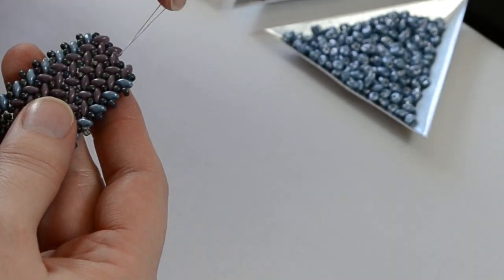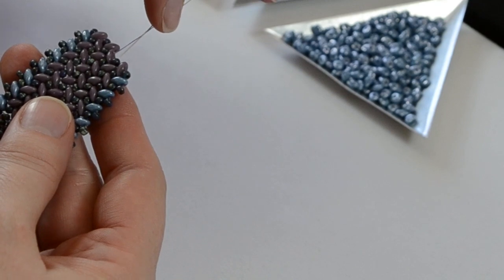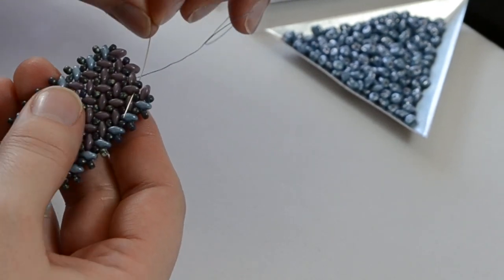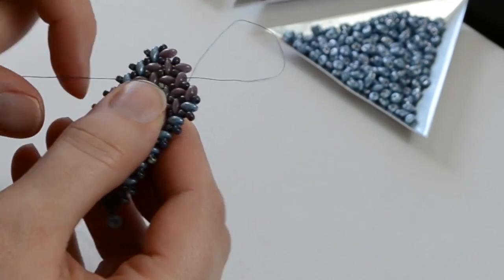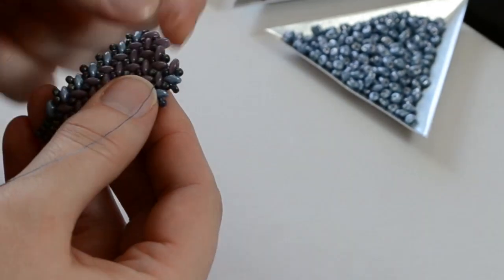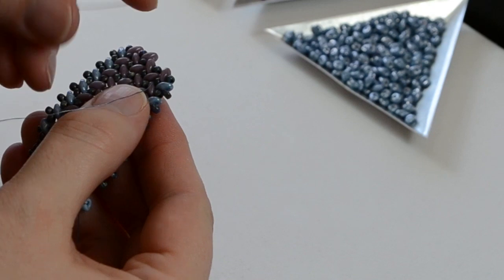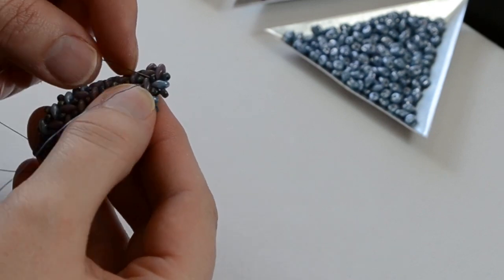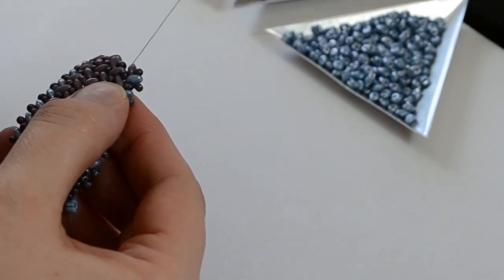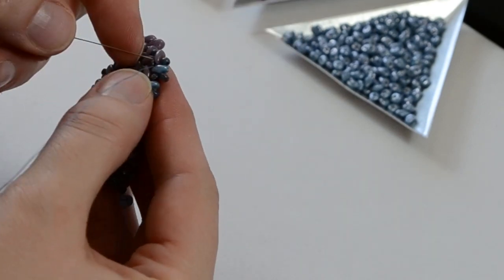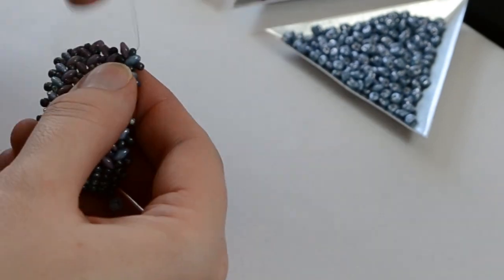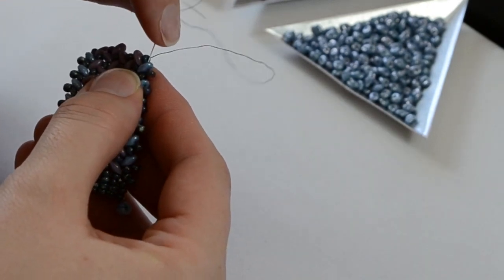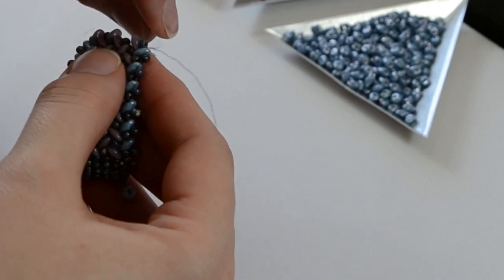Instead of taking your next stitch, you're going to go down into the next couple of beads. We're going to weave this tail in by following the thread path as much as we can. I'm just going to follow the thread back in the way that it went before, and then I'm going to tie the thread off and add in new thread.